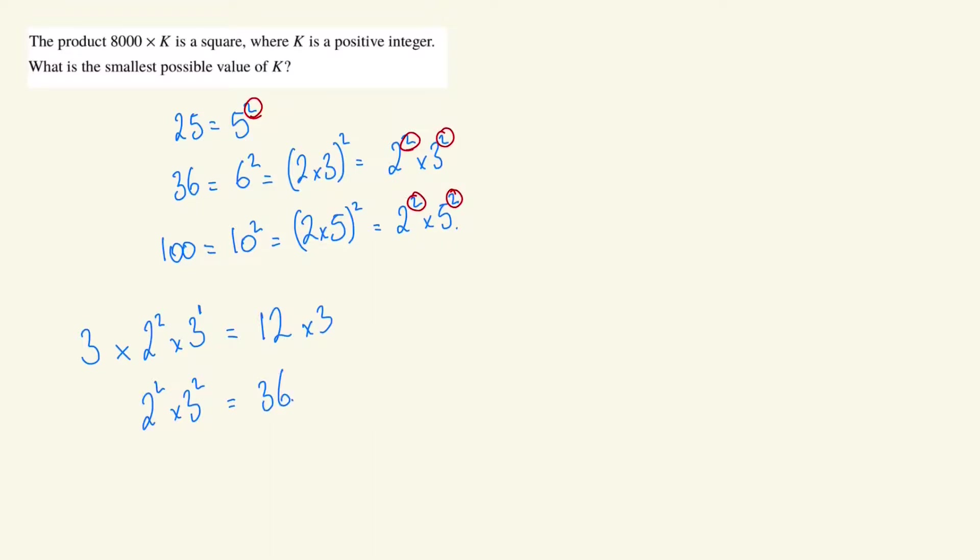So let's think about what the prime factors of 8,000 are. So 8,000 is 8 times 1,000. 8 is 2 times 2 times 2. And 1,000 is 10 times 100. 10 is 2 times 5. 100 is 10 times 10, which is also 2 times 5 and 2 times 5.